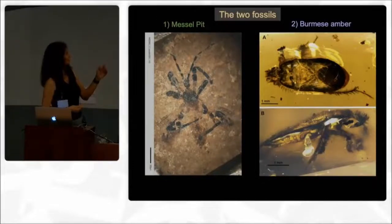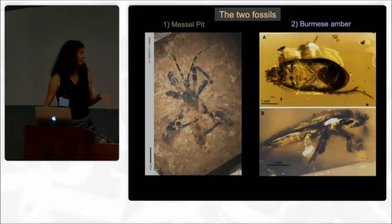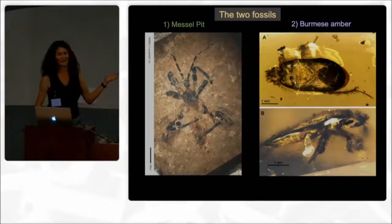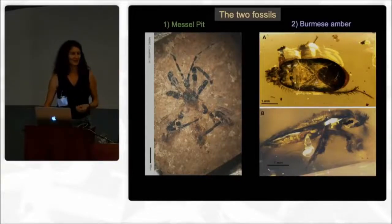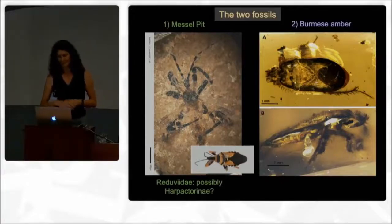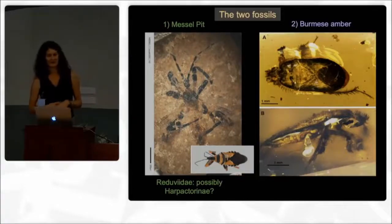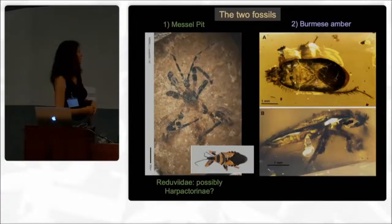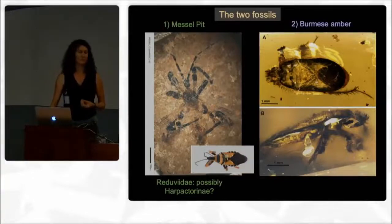I'm referring to the one on the left as the mesopid, or just the meso-fossil. This is what it looks like — a little difficult to see. It's the kind of fossil you keep staring at trying to figure things out; it's just a lot of hard work. After a lot of staring, we decided yes, it's a Reduviidae — that's not a question — and we think it's probably a Halpachturine. The second fossil, much easier to deal with in many ways because it's Burmese amber, but in many ways a lot more weird because it's very old.